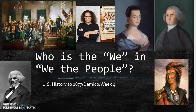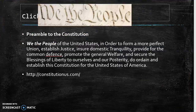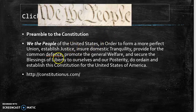When the Founding Fathers got together in Philadelphia in 1787, they felt their first attempt at a republic wasn't going so well and they needed to do better. This is how they framed it: 'We the people of the United States are doing this.' So my question for this week is: who is the 'we' in that 'We the People'?